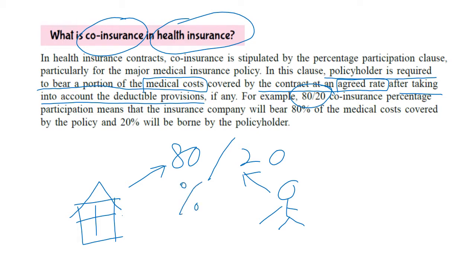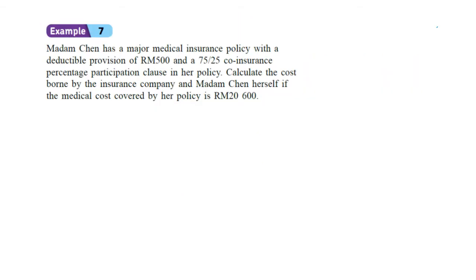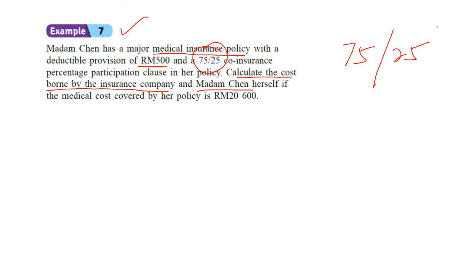Let's see Example 7. Madam Chen has a major medical insurance policy with a deductible provision of 500, and the Co-Insurance Percentage Participation Clause in her policy is 75-25. Calculate the cost borne by the insurance company and by Madam Chen herself, given that the medical cost is 20,600.